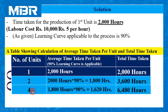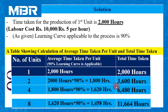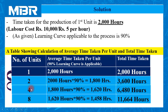For four units — doubling from 2 to 4 — the average time when we manufactured two units was 1,800 hours. So 1,800 multiplied by 90% equals 1,620 hours per unit, and total time for 4 units is 6,480 hours. For eight units — doubling from 4 to 8 — the average time of 1,620 hours multiplied by 90% equals 1,458 hours per unit, so total time for 8 units is 11,664 hours.